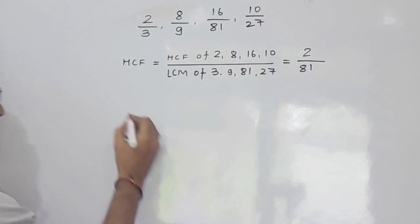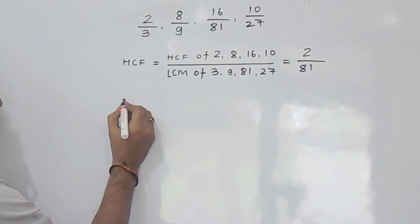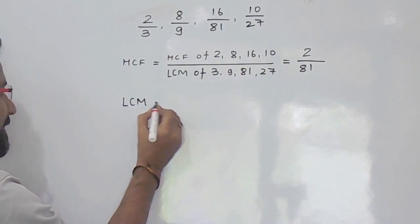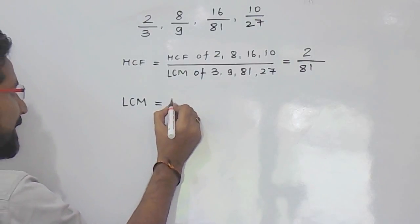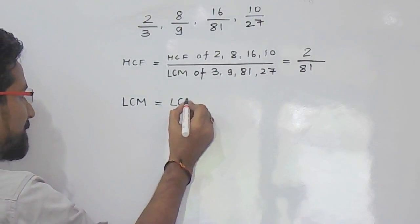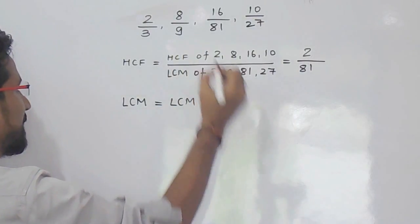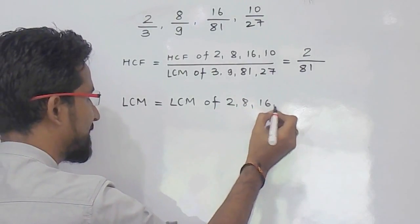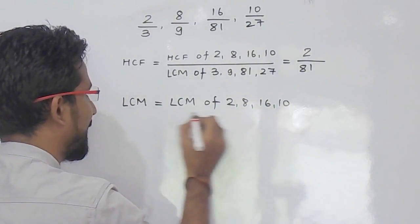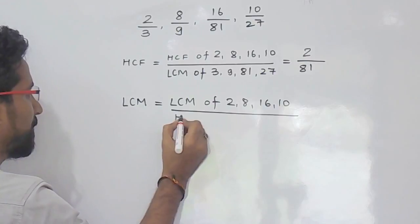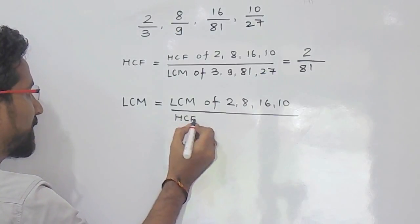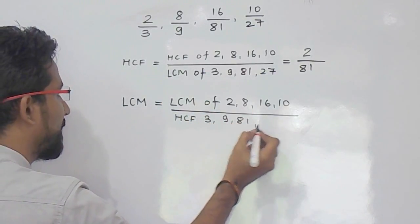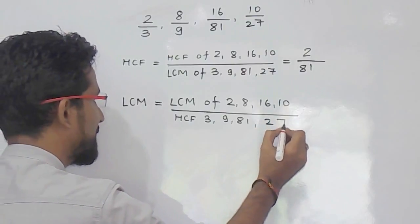Now, if you want to find out the LCM of these fractions, what you have to do is take the LCM of the numerators — that is 2, 8, 16, and 10 — and the HCF of the denominators — that is 3, 9, 81, and 27.